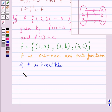Now f inverse is given by the set of ordered pairs: (a, 1), (b, 2), and (c, 3).